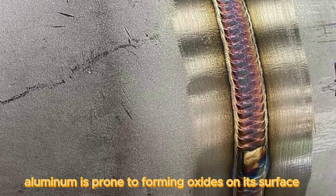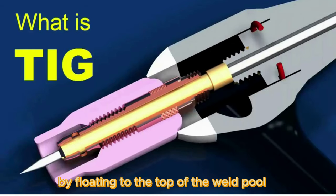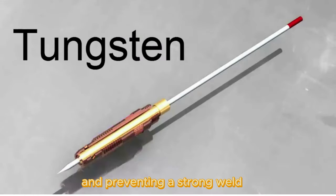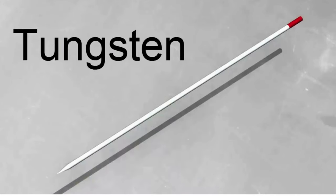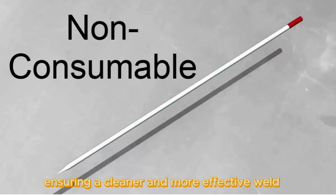Aluminum is prone to forming oxides on its surface, which can interfere with the welding process by floating to the top of the weld pool and preventing a strong weld. The AC current helps to break down these oxides, ensuring a cleaner and more effective weld.